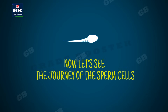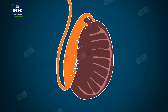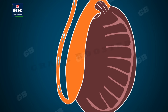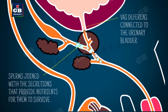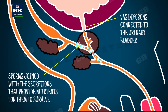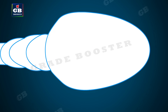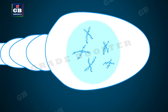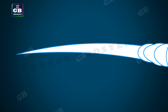Sperm cells formed in the testes travel through a tube called the vas deferens, and along the way they are joined with fluid secretions from the prostate gland and seminal vesicles. The vas deferens is a common duct for both sperms and urine; it is also connected to the urinary bladder. Sperms are tiny bodies that consist mainly of genetic material and a long tail that helps them move towards the female germ cell.